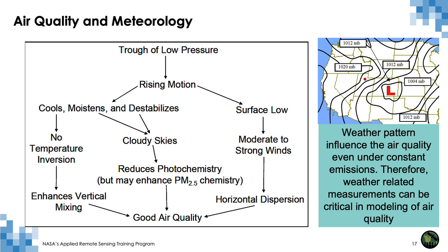Similarly, a trough of low pressure can lead to good air quality through multiple pathways. Rising motions create a surface low with moderate to strong winds, allowing horizontal dispersion and resulting in good air quality. The cool, moist air destabilizes the atmosphere, creating cloudy skies which can reduce photochemistry — though it can also sometimes enhance PM2.5 chemistry inside the cloud, leading to good or bad air quality. Under rising motions there is less chance of temperature inversion, which enhances vertical mixing and can lead to good air quality.